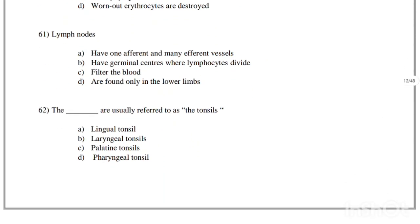Lymph nodes: have one afferent and many efferent vessels; have germinal centers where lymphocytes divide; filter the blood; are found only in the lower limbs. Correct answer is option B, lymph nodes have germinal centers where lymphocytes divide.